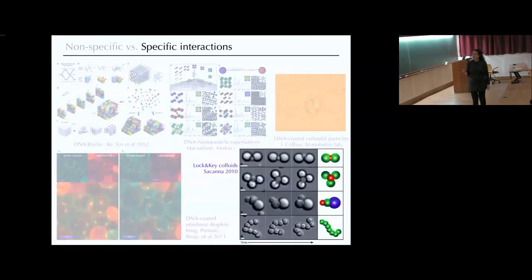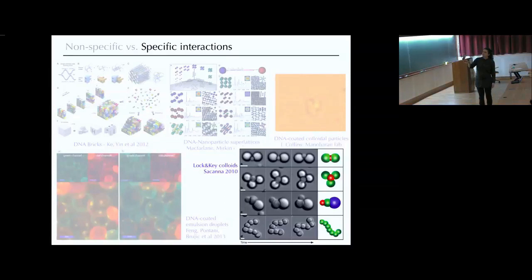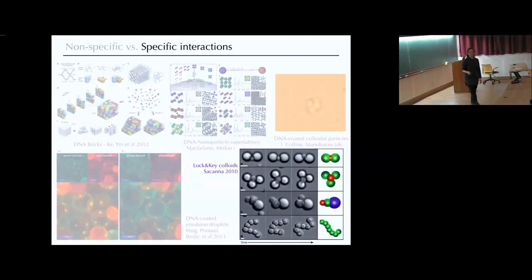Another way to make specific interactions — important for building artificial living matter — are so-called lock-and-key interactions. On the micron scale, they make protrusions in colloidal particles such that only particles of a certain size can fit into the holes. By varying the size ratio between particles and holes, they can make all kinds of objects that interact in a lock-and-key manner.